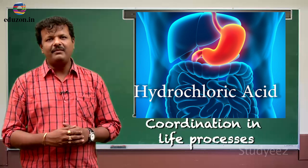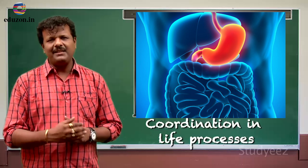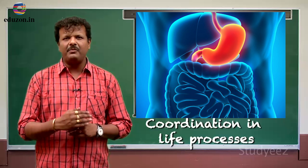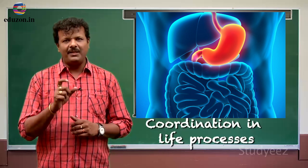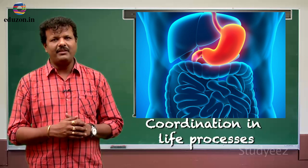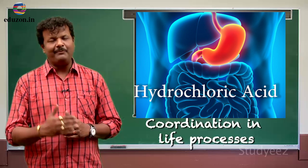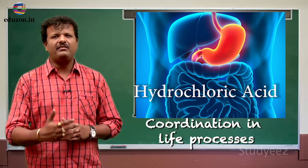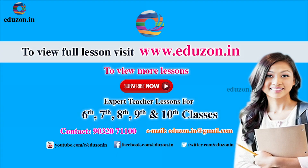Enzymes also play a prominent role in the process of digestion. These enzymes will be active only at a particular temperature. That temperature is maintained in the stomach by dilute HCl — meaning dilute HCl creates a particular temperature in the stomach which makes the enzymes active. It also kills the harmful bacteria that is present in the food being consumed by us.